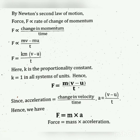Therefore, change in momentum is equal to final momentum minus initial momentum, that is MV minus MU. Rate of change of momentum means the quantity which changes by time — momentum changes by time. So, rate of change of momentum is equal to MV minus MU divided by T. Substituting in Newton's second law, force is proportional to rate of change of momentum, so F is proportional to MV minus MU by T.